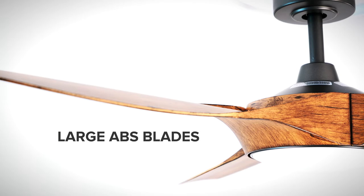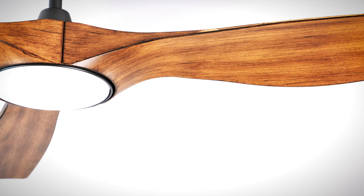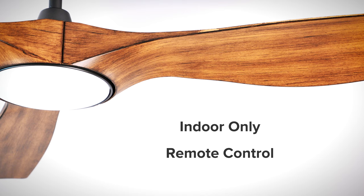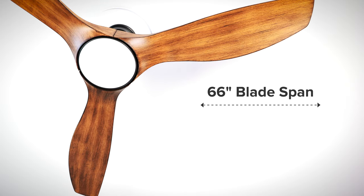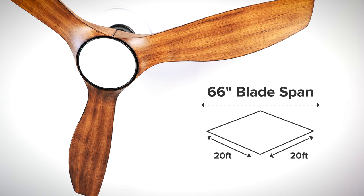The 66-inch Marlin is a ceiling fan with a modern DC motor and large ABS blades. The fan is rated for indoor use and is remote control operated. The 66-inch blade span is perfectly suited for great rooms that are 20 feet by 20 feet or larger.